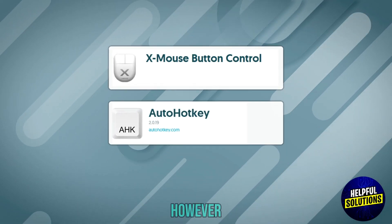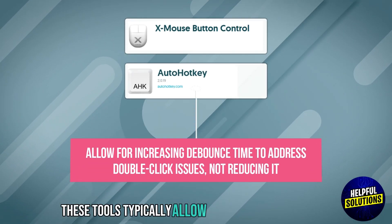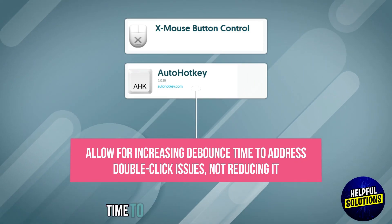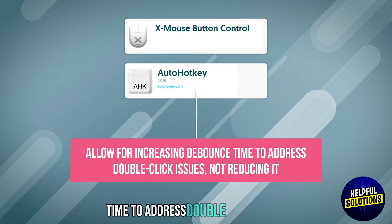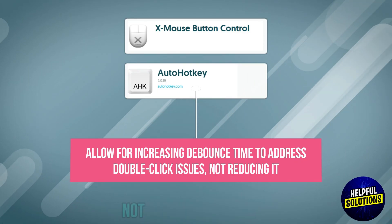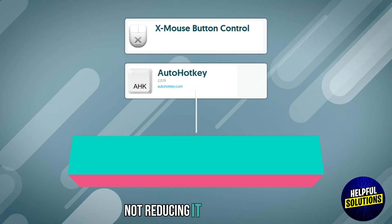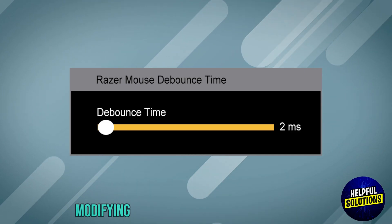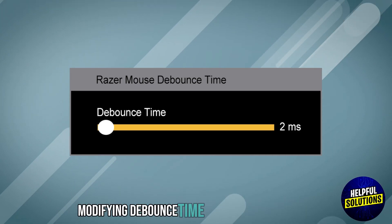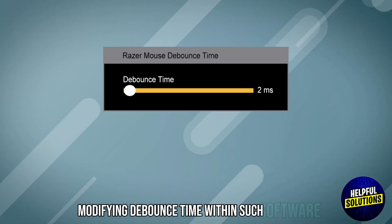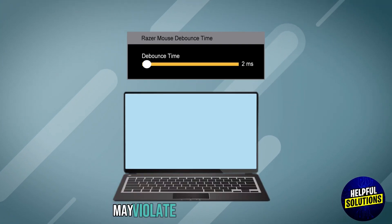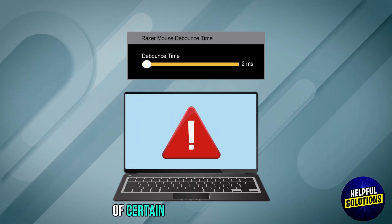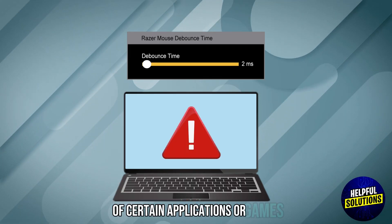However, these tools typically allow for increasing Debounce Time to address double-click issues, not reducing it. Additionally, modifying Debounce Time using such software may violate the terms of service of certain applications or games.